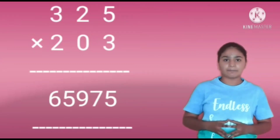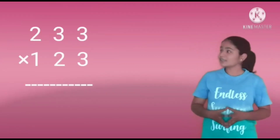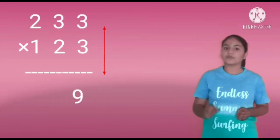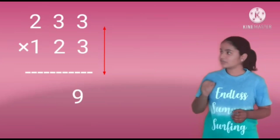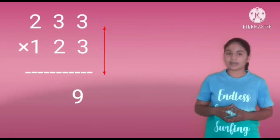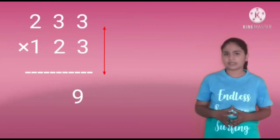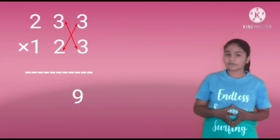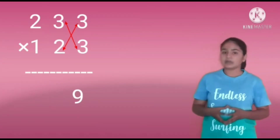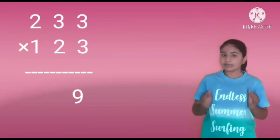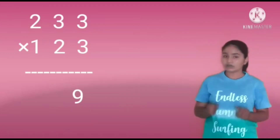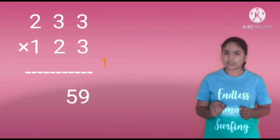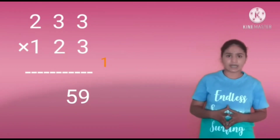Now let us see another example. 233 is multiplied by 123. We have to do unit digit multiplication. That is 3 into 3 equals 9. Write the 9 in the units place. Next, we have to do cross multiplication of 3 into 3 and 2 into 3. It will be 9 and 6. Add these numbers, we will get 15. Write the 5 in the 10s place and keep 1 as carry.